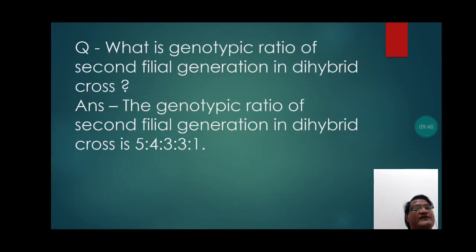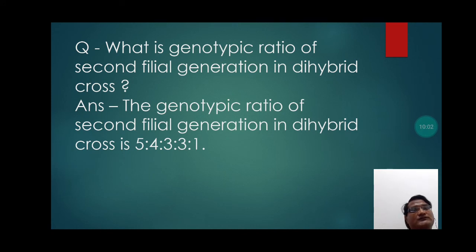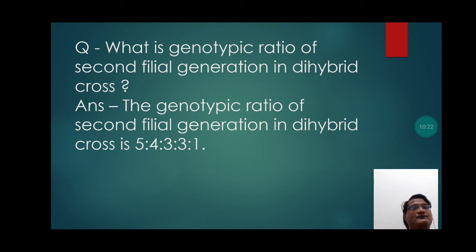Now let us discuss an important question: What is the genotypic ratio of the second filial generation in dihybrid cross? The genotypic ratio of the F2 generation in dihybrid cross is 1:2:2:4:1:2:1:2:1, which can also be expressed as 5:4:3:3:1. Thank you, students.